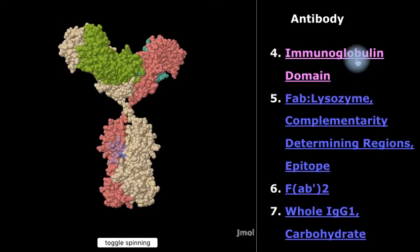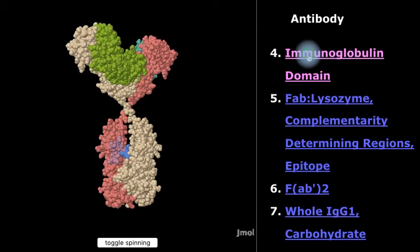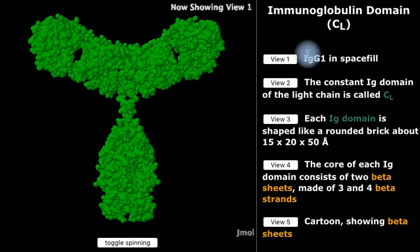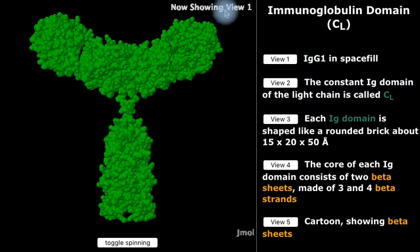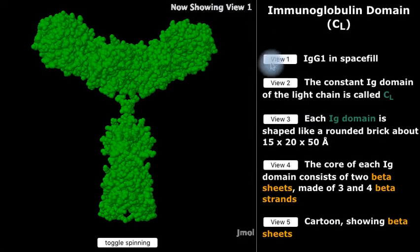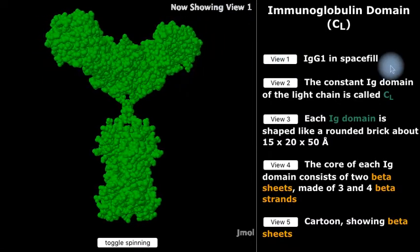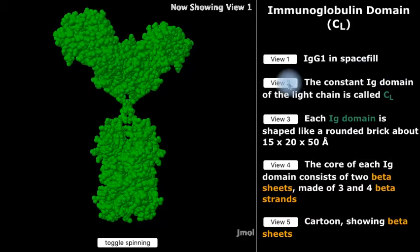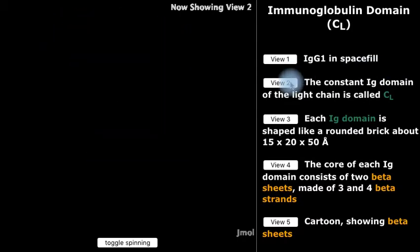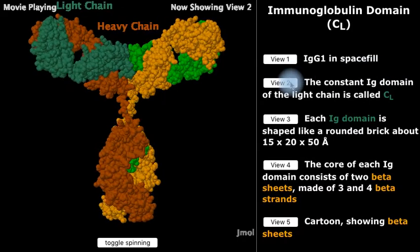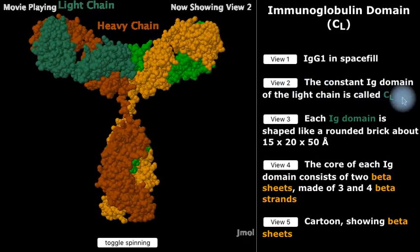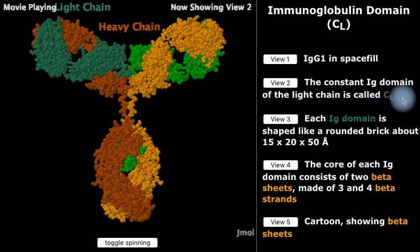First we'll look at the structure of a single immunoglobulin domain. Up here at the top tells which view we are looking at, and which text at the right you should pay attention to. Now we'll go to view 2.